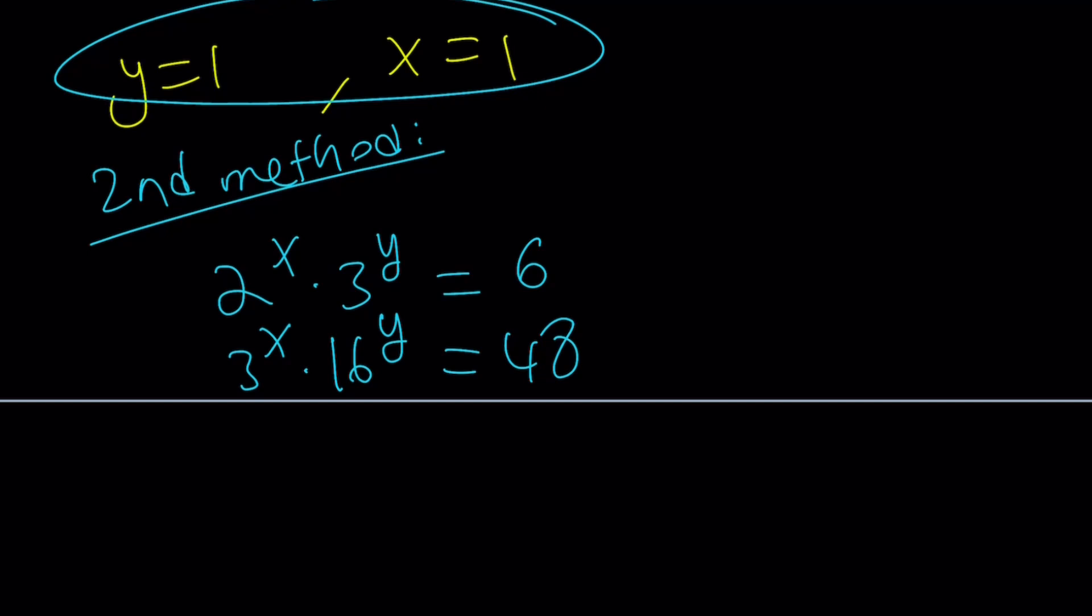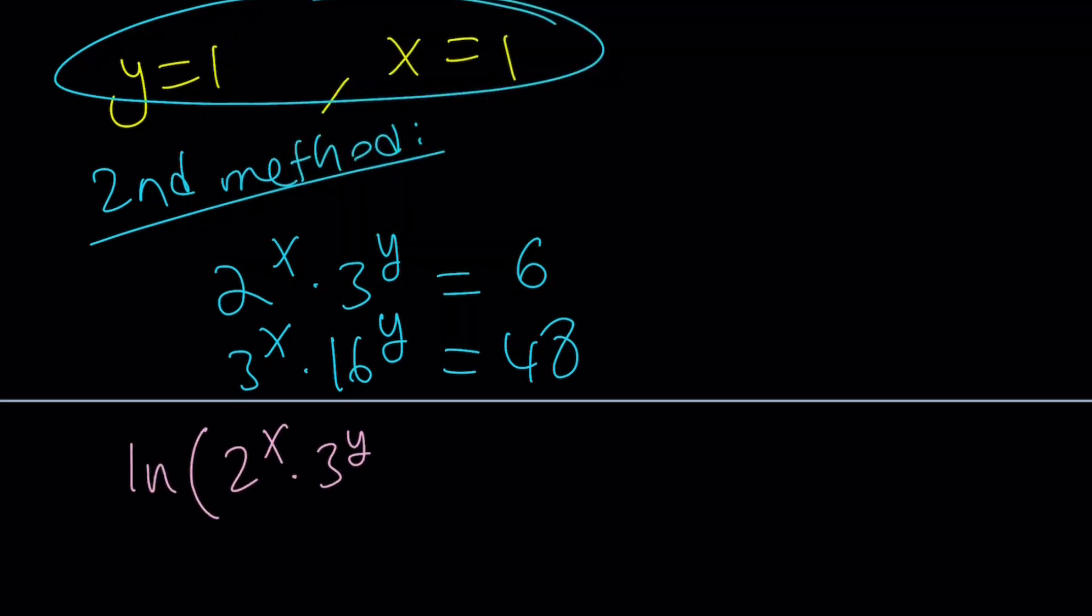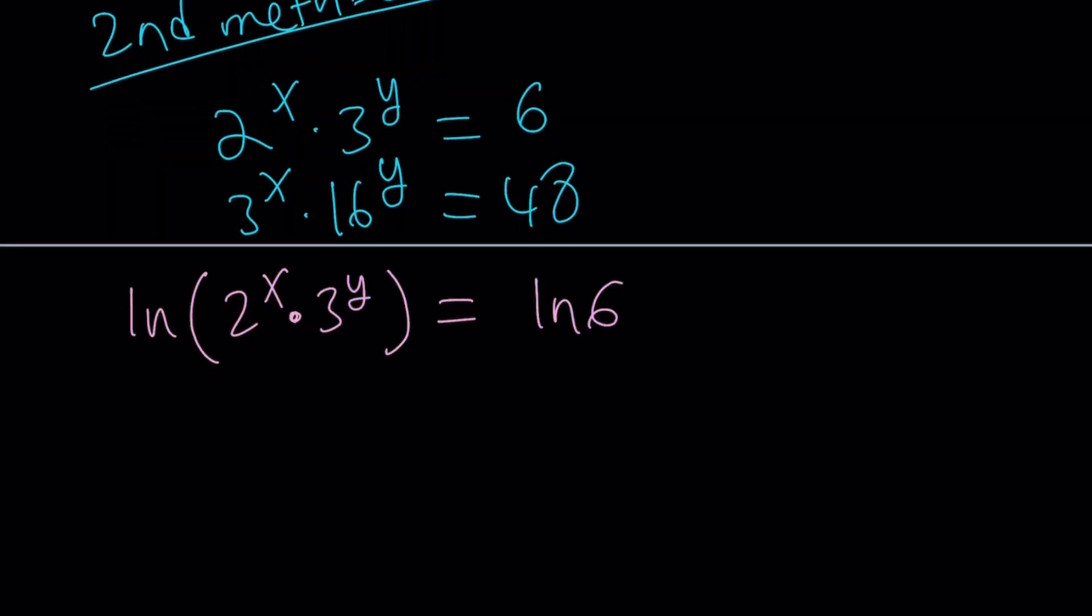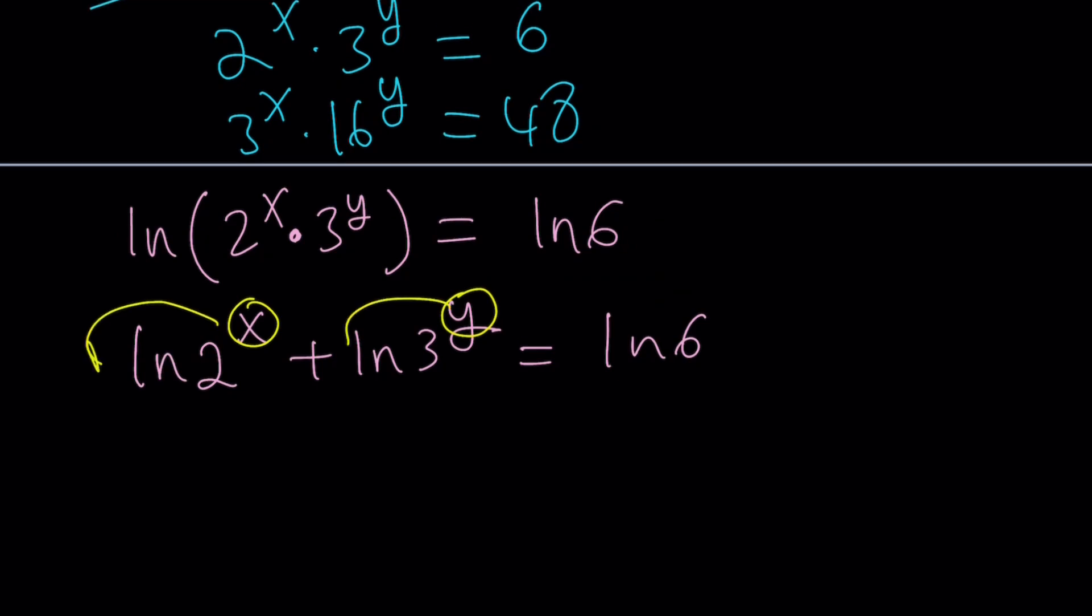Okay, here's how my second method works. And if you said natural log, you got it right. So we're going to natural log both sides of both equations. Let's start with the first one. Let's ln, which is natural log, 2^x times 3^y, and let's ln 6. When you distribute, like if you have the ln of a product, it means the sum of the ln's. So it's kind of like expanding it. You can also condense if you go backwards. And then we get this. And then we have the power property, which tells us you can move the power. This is one of the most important ones. And it's very easy to prove. It's very helpful.